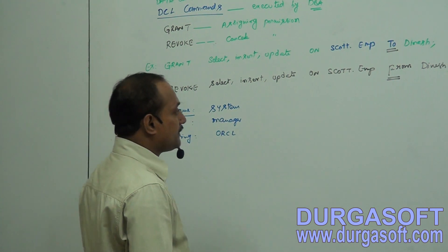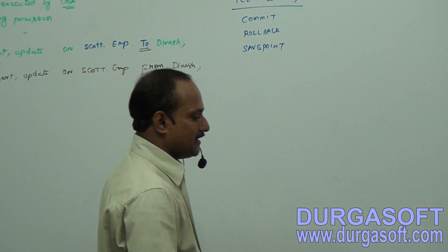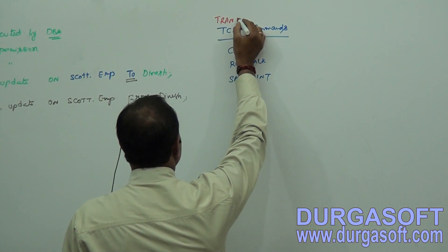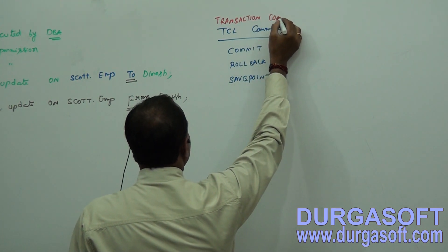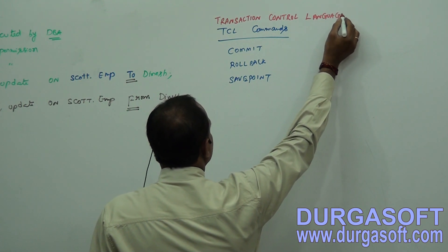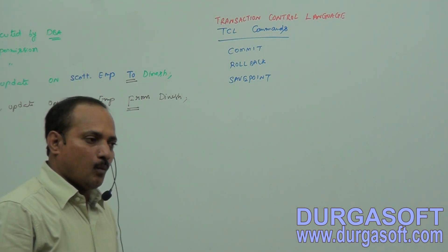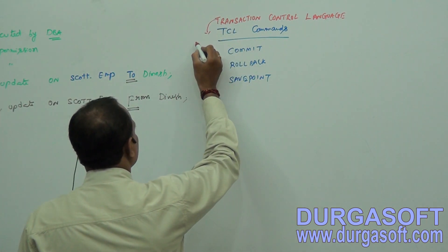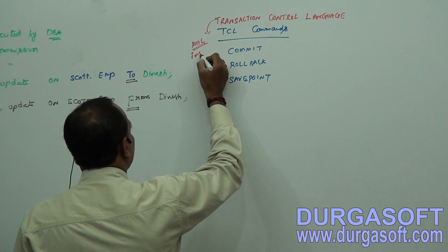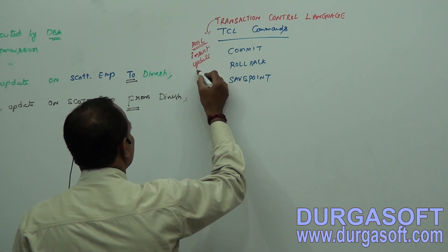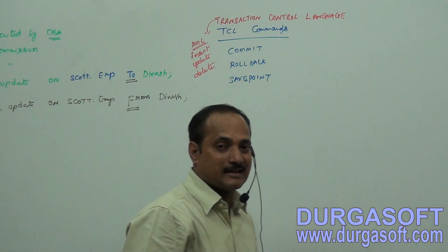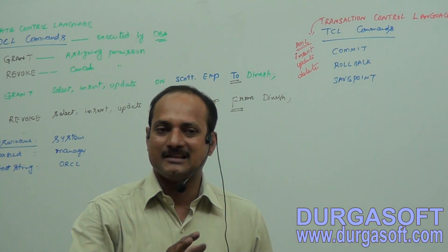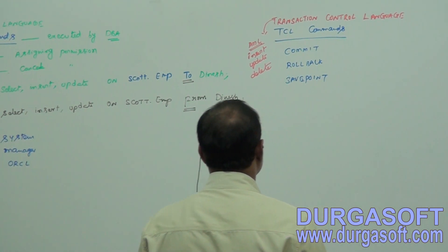That is all about DCL commands. Now have a look at TCL commands. TCL stands for Transaction Control Language commands. A transaction refers to DML commands — that is INSERT, UPDATE, and DELETE. These operations are considered as transactions on the table data. If you made insertions into a table and you want to cancel them, you can use the ROLLBACK command.